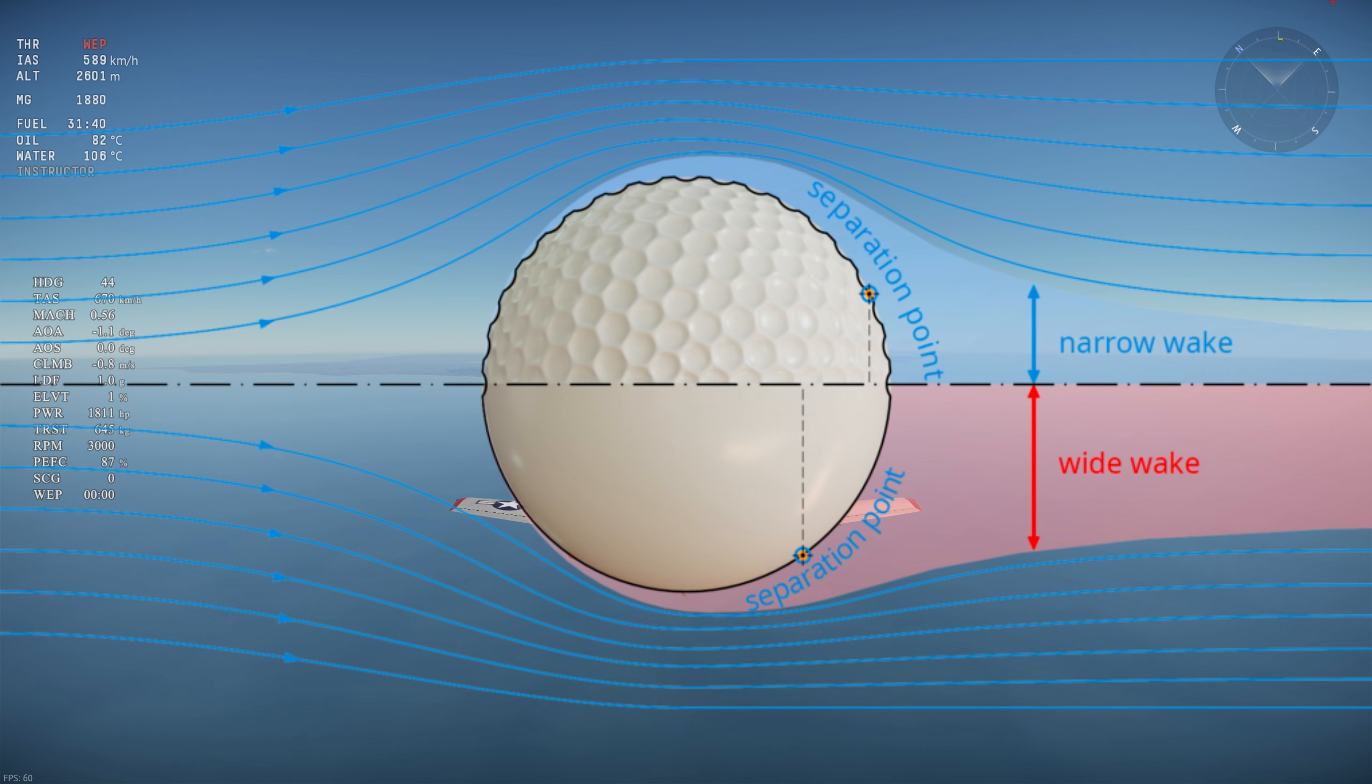Dimples on golf balls serve a similar function by transitioning to turbulent flow earlier, and turbulent flow stays attached to the golf ball for longer, significantly reducing pressure drag which has a much bigger effect than the slightly increasing skin friction drag.